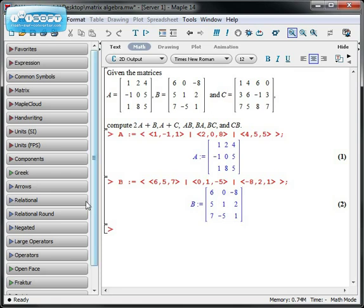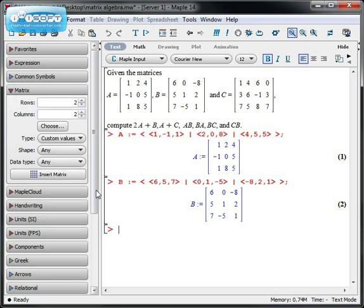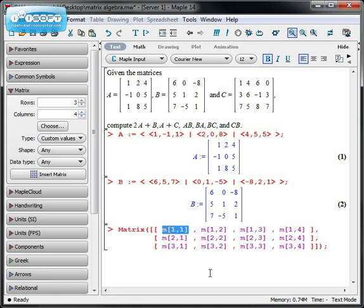I also have this matrix C here. To show you how to enter a matrix a different way, you might notice that you have these pallets over on the side. One of the pallets says matrix. If you click on it, it has a matrix builder. If I select three rows and four columns and then hit insert matrix, then I have the option of entering the matrix in by its rows.